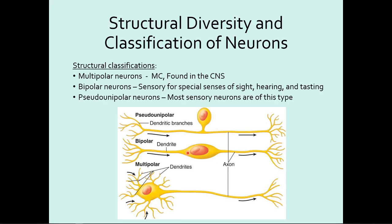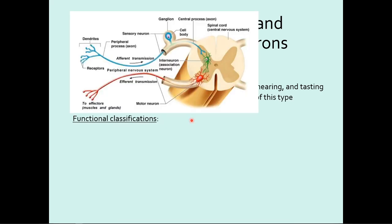The last structural type is pseudo-unipolar — pseudo means fake or false. These look like only one thing is coming off the neuron, but they pretty much act like a bipolar neuron. There's only one short, nubby extension coming off the soma, which then branches out to either side — one side is the dendrite, the other is the axon. Pseudo-unipolar neurons are the most common type found in the sensory portion of the peripheral nervous system.